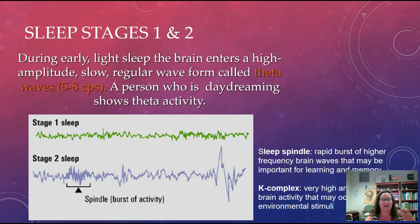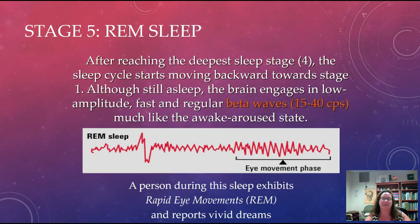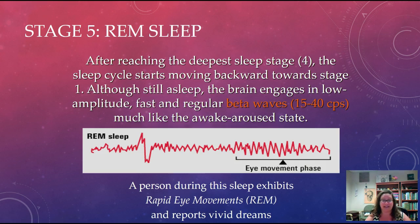In stages three and four, brain activity slows down and we start to see delta waves. People are less likely to be woken by external stimuli — this is a period of deep, restful sleep. REM sleep is a really important stage. Although the person is asleep, we actually see those beta waves again, as if the person is more awake or aroused. During REM sleep the eyes move back and forth, and this is when we actually do our dreaming.